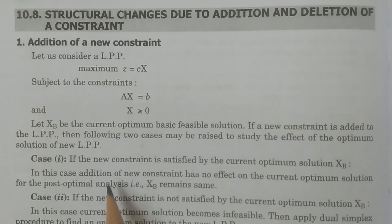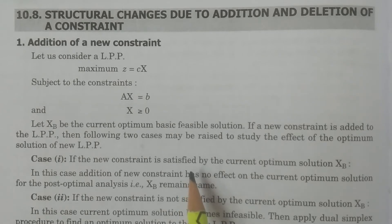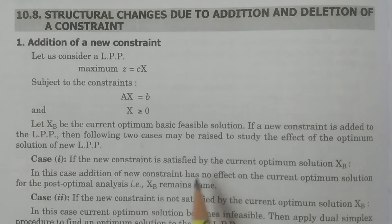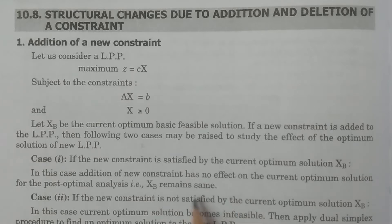Case one: if the new constraint is satisfied by the current optimum solution xb, then addition of the new constraint has no effect on the current optimum solution in the post-optimal analysis. So in case one, if the new constraint is satisfied by the current optimum solution, then obviously no change — xb remains the same.